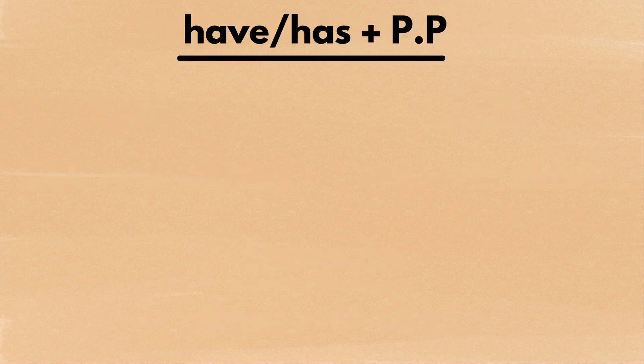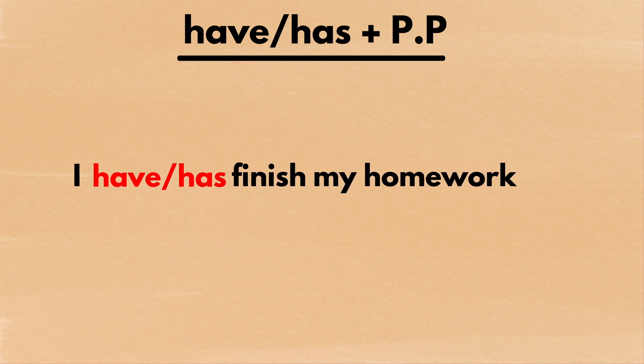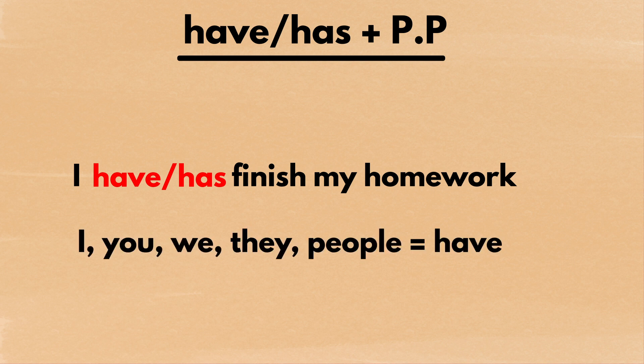Later in the video, you'll hear have or has plus pp. What it means is to put have or has in front of the original verb you have and change the original verb into its pp form. Let's say we want to change the sentence I finished homework into have or has plus pp form. First, put have or has in front of the verb finish.